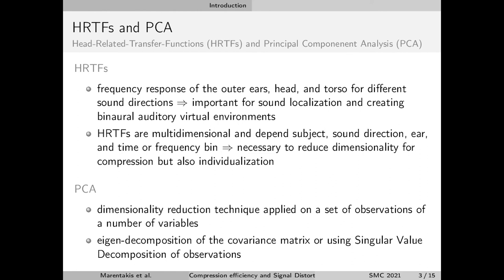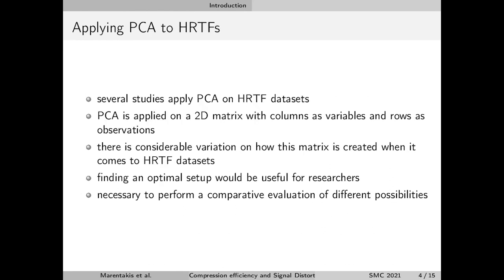PCA is typically calculated using the eigendecomposition of the observation covariance matrix, or using the singular value decomposition of the observations. There are several studies which apply principal component analysis on HRTF datasets. PCA requires a two-dimensional matrix in which columns are used as variables and rows as observations. How to shape HRTFs into a two-dimensional matrix is not always straightforward, and therefore there is considerable variation on how this matrix is created when it comes to HRTF datasets.